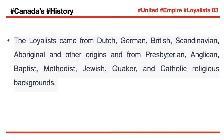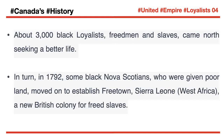The Loyalists came from Aboriginal and other origins, and from Presbyterian, Anglican, Baptist, Methodist, Jewish, Quaker and Catholic religious backgrounds. About 3,000 black Loyalists — freedmen and slaves — came north seeking a better life. In 1792, some black Nova Scotians, who were given poor land, moved on to establish Freetown, Sierra Leone, West Africa, a new British colony for freed slaves.